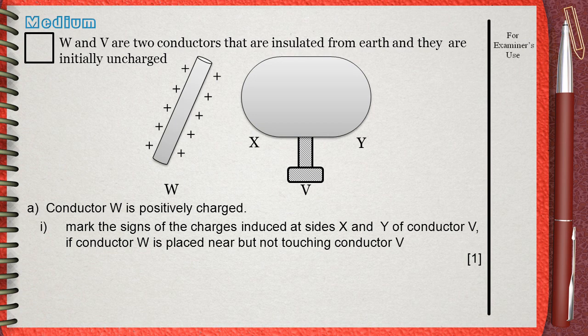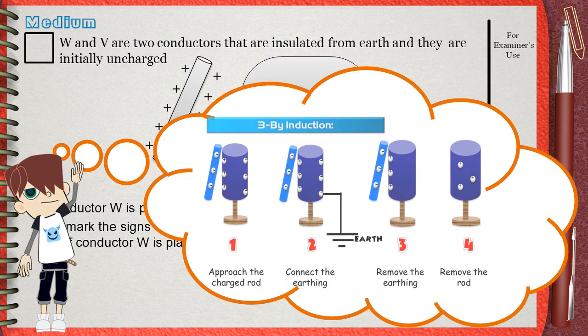we first must understand what happens in the atomic and electronic scale inside Conductor V. To understand this part, you must study charging by induction, one of the methods of charging different objects. Any metal is made up of atoms.